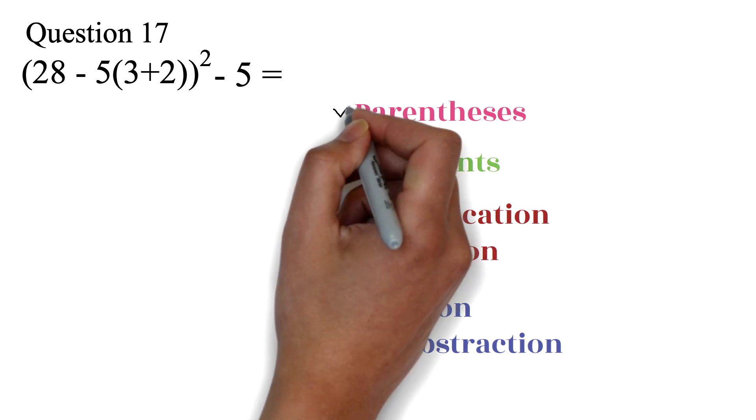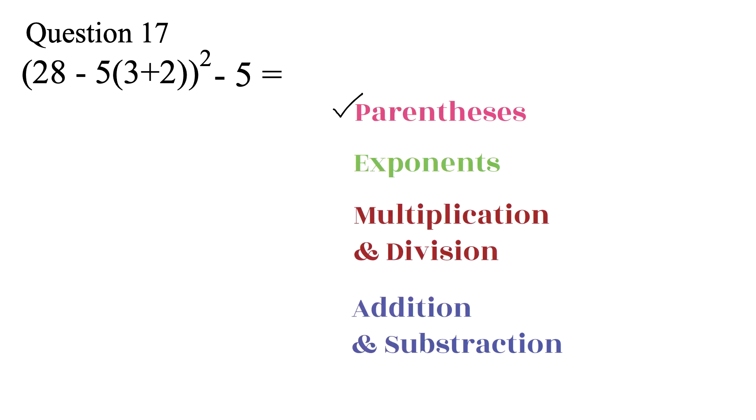Again, we will perform the operation within the parentheses first. We notice that there's parentheses within parentheses. In this case, we will perform the inner one first. So, we have 3 plus 2, to get 5.